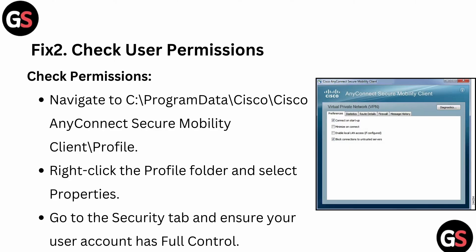After that, check the user permissions. Navigate to the path: ProgramData > Cisco > Cisco AnyConnect Secure Mobility Client > Profile. Then right-click on the Profile folder, select Properties, go to the Security tab, and ensure your user account has full control.